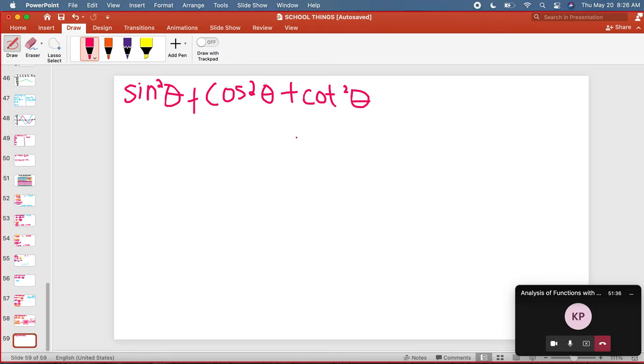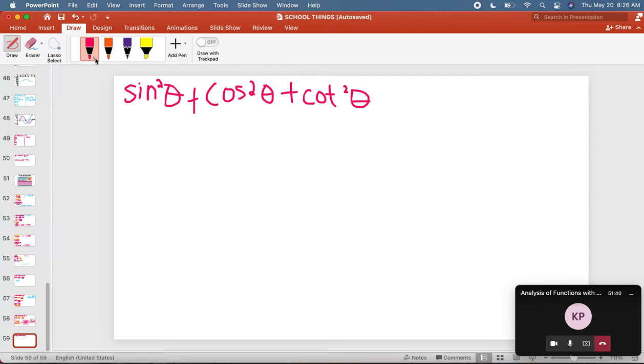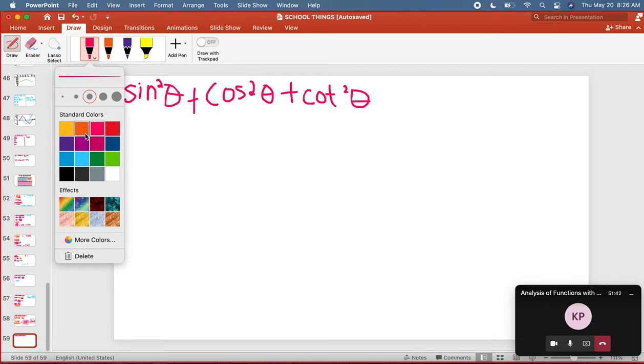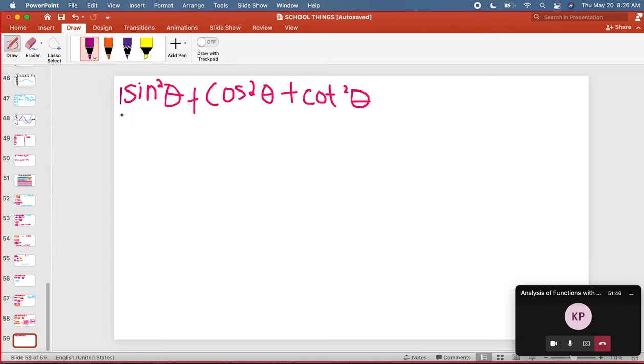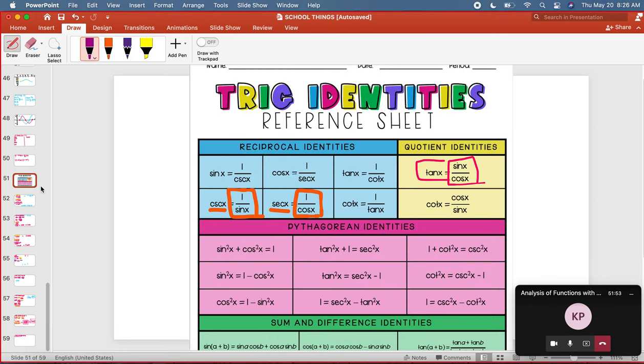Okay, so the first thing that we're gonna notice is I have a sine squared theta plus a cosine squared theta. I could guarantee you that almost anytime you see both of those together, they're trying to get you to turn it into one.